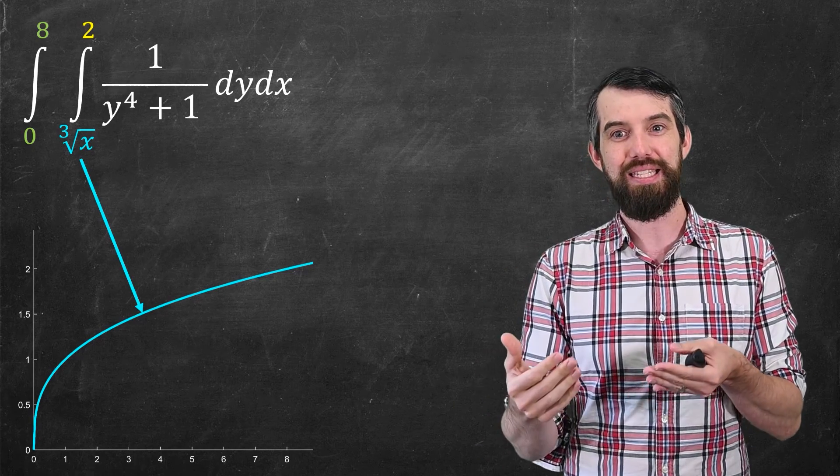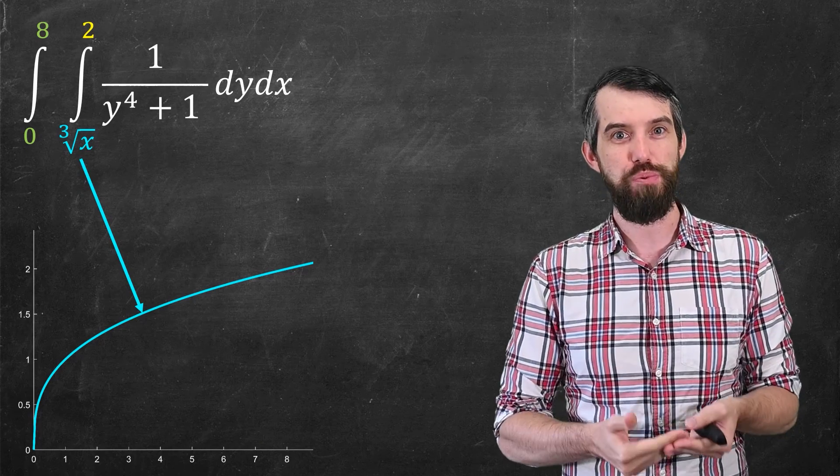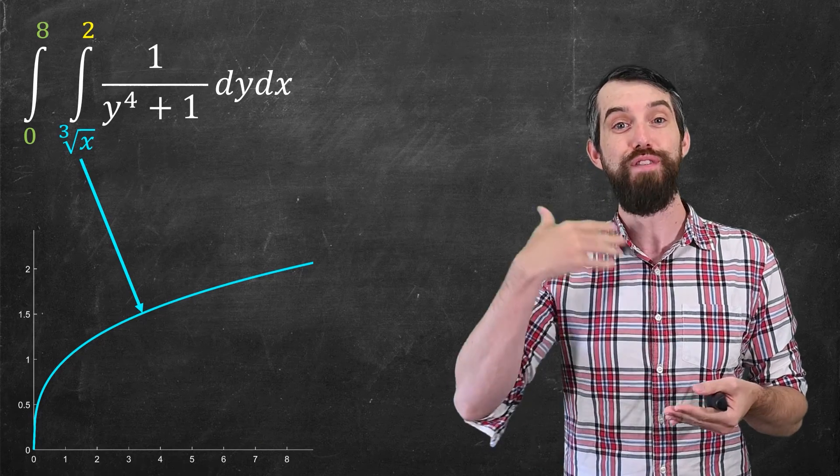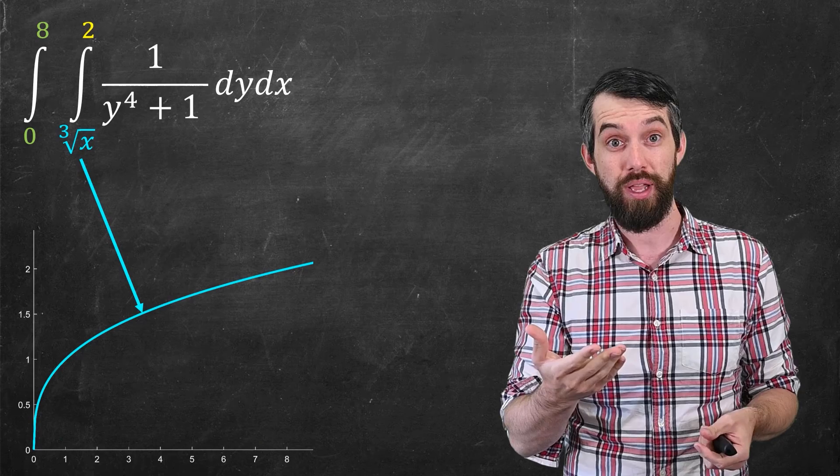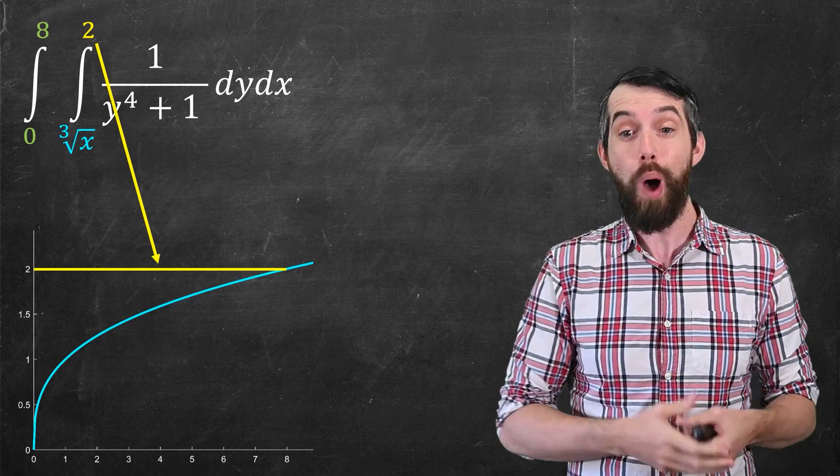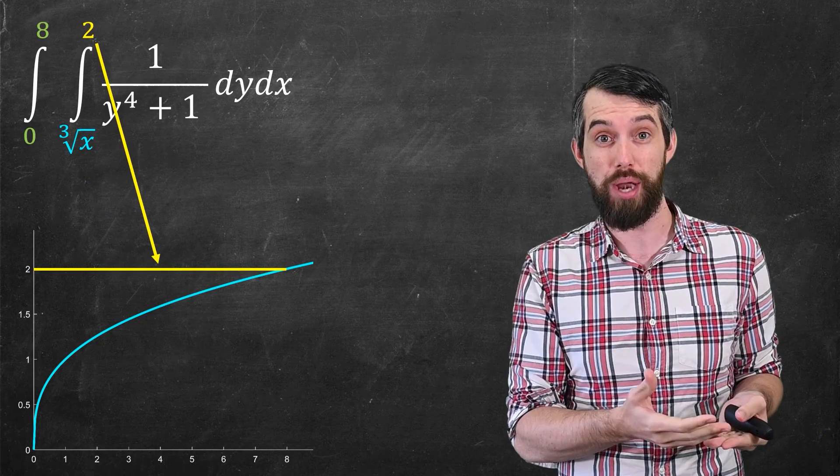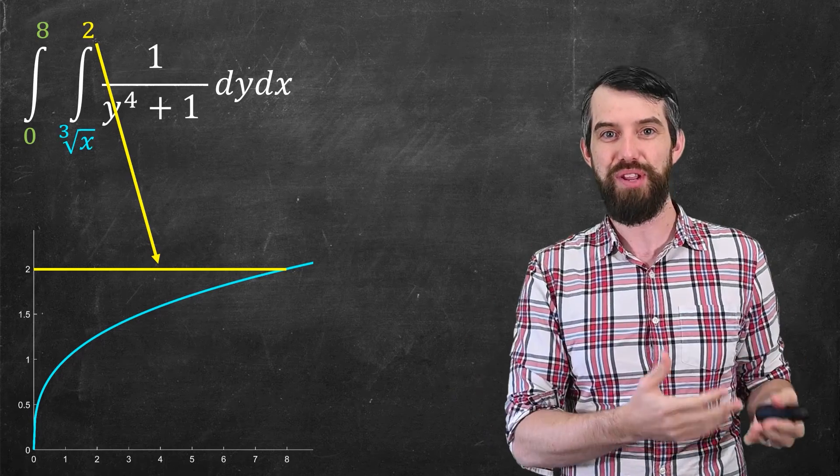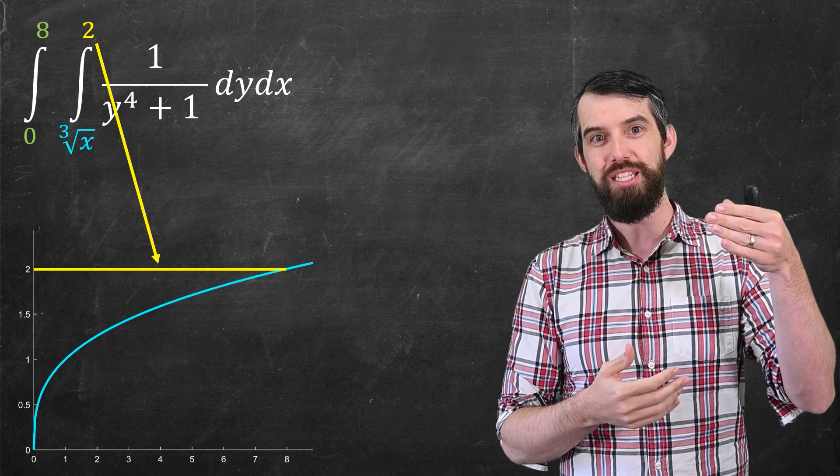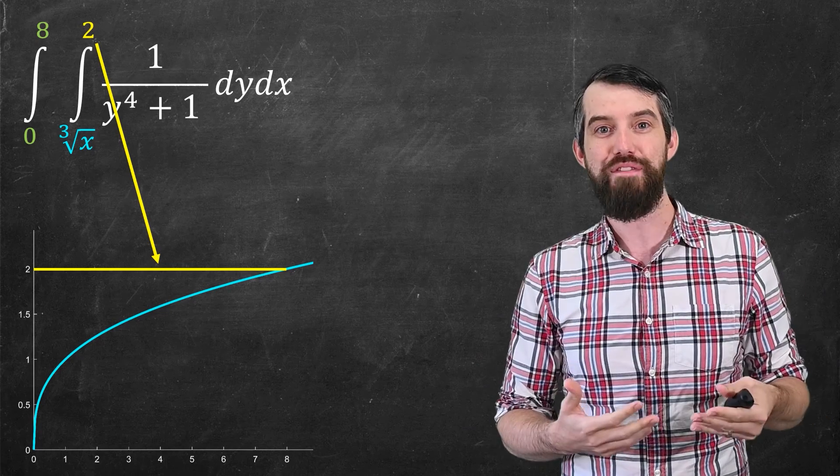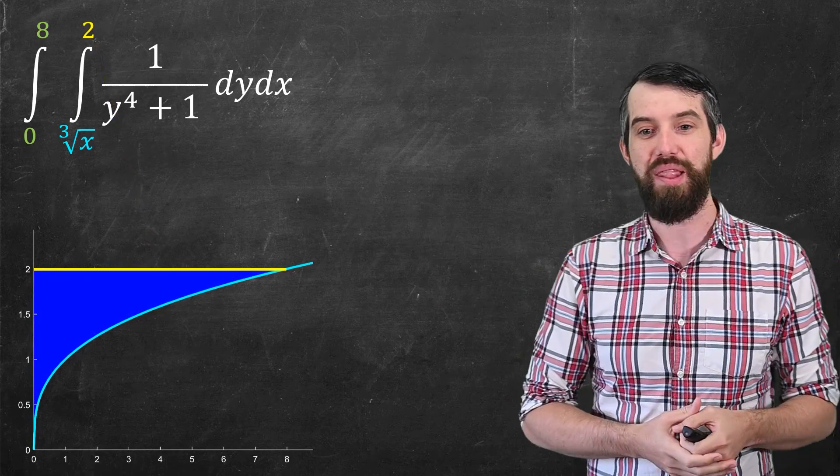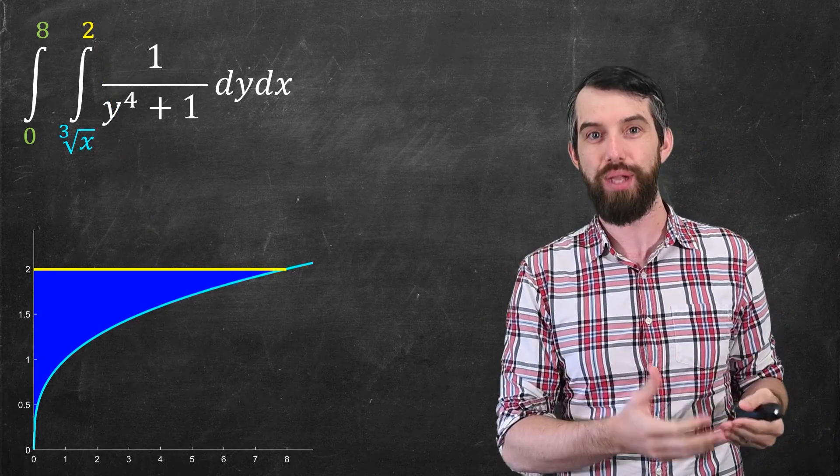And then what it's saying is that y is going from this cube root of x on the bottom up to the value of y equal to 2. And so I'm also going to come here and put y equal to 2 on the same plot. So this interval between cube root of x and 2 is basically saying that is all the y values. And I may as well just fill it in. This is the region that I want to look at.